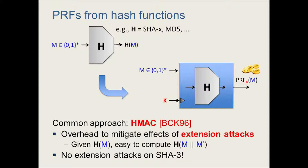HMAC has some extra overhead we would not like to have, which is due to the fact that the HMAC construction needs to deal with potential extension attacks on the underlying hash function. For all hash functions before SHA-3 used in practice, it is easy, given H of M, to compute the hash of an extension of M even without knowing M. But for SHA-3, there are no extension attacks by design.